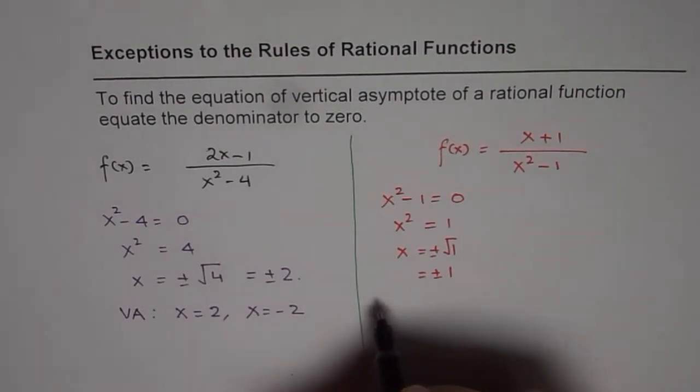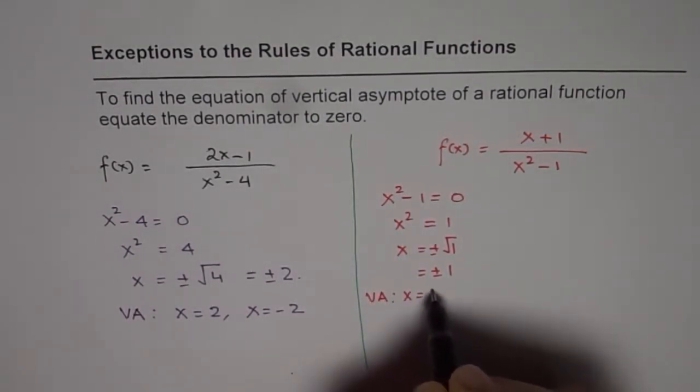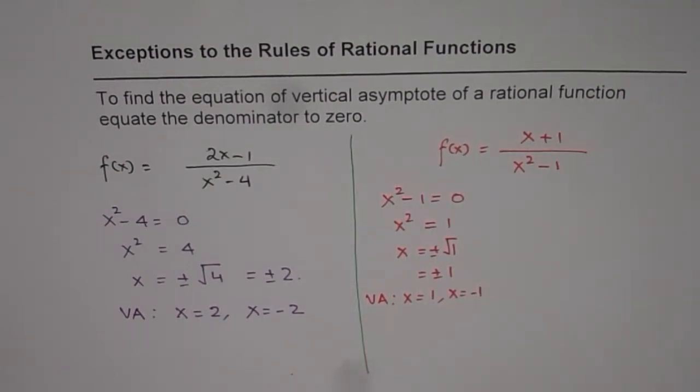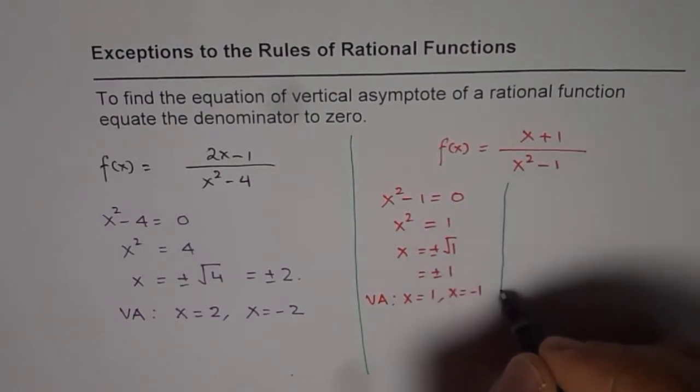Now, the question is, do you have vertical asymptote at x equals 1 and at x equals minus 1? No. So, it is an exception to the rule.